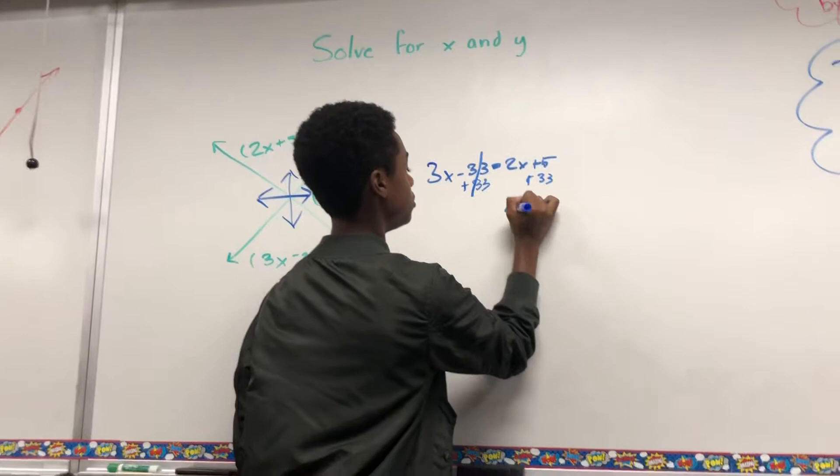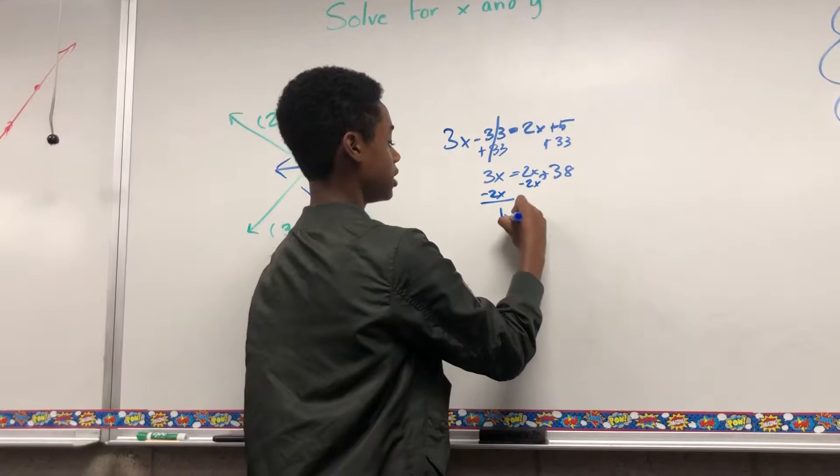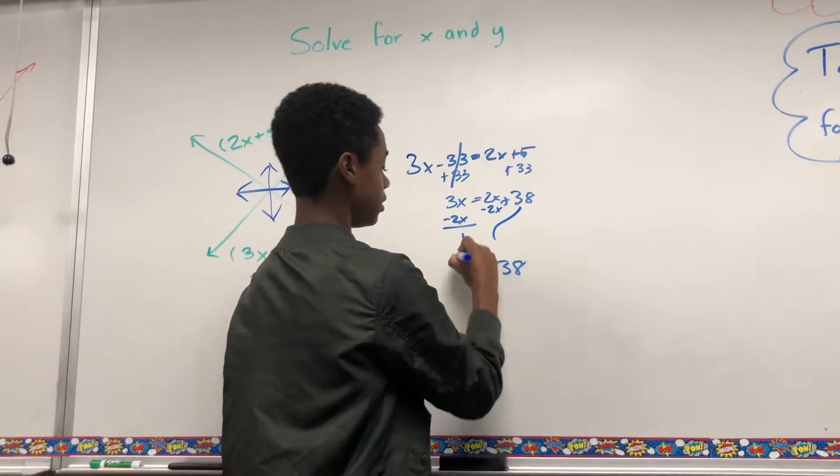Now you want to subtract 2x from both sides, which gives you 1x, or just x. You bring it out, which gives you 38, so x equals 38.